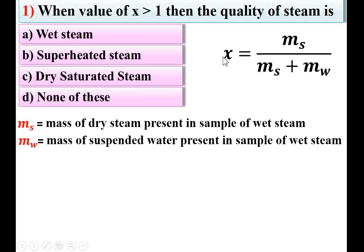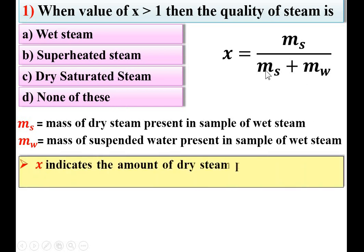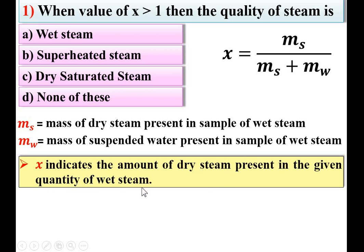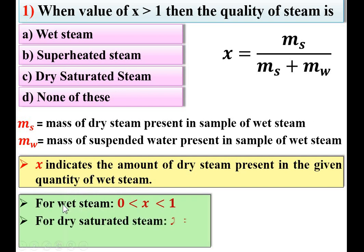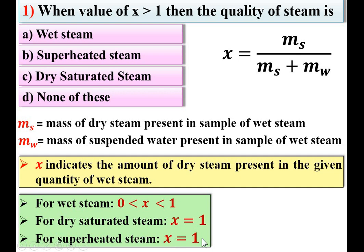The minimum value of X is 0 and maximum value is 1. So the dryness fraction of steam is between 0 and 1 only. X greater than 1 is not at all possible, so none of these is the right answer. The dryness fraction indicates the amount of dry steam present in the given quantity of wet steam. For wet steam, X is between 0 to 1; for dry saturated steam, X = 1; for superheated steam, X = 1 also. So none of these is the right answer.